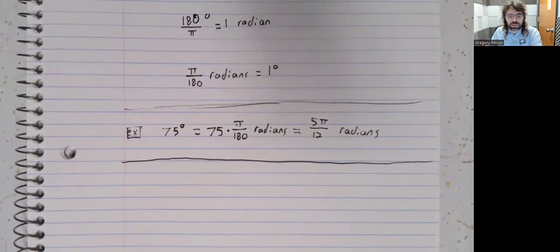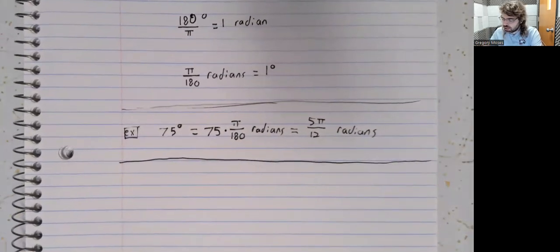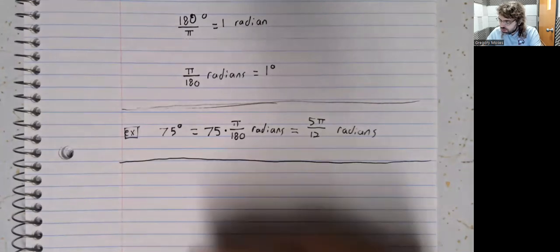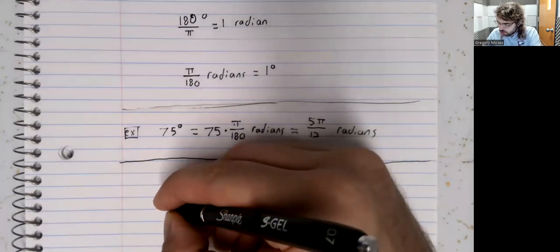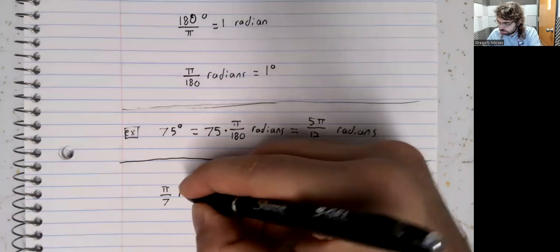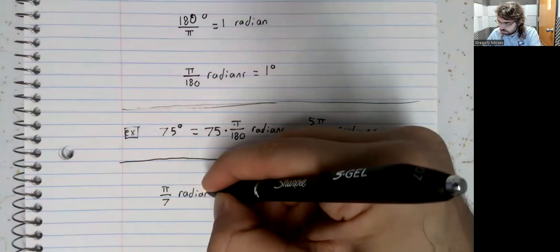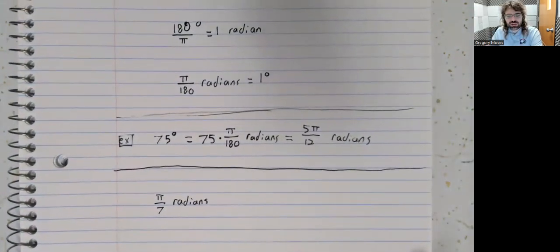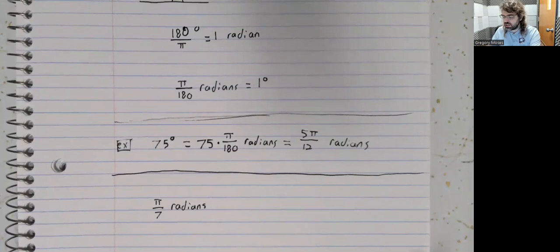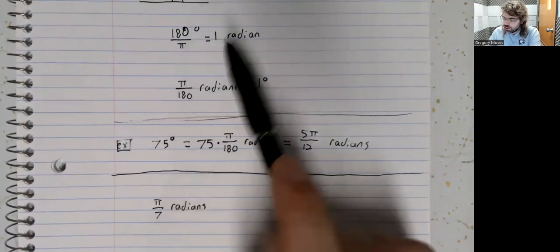Going the other way, let's just pick an angle out of the air. Let's say pi over 7 radians.